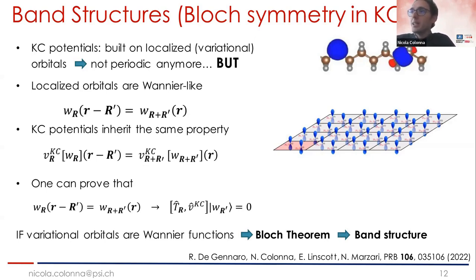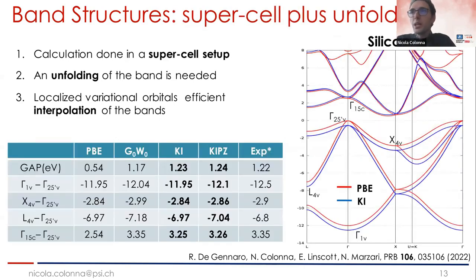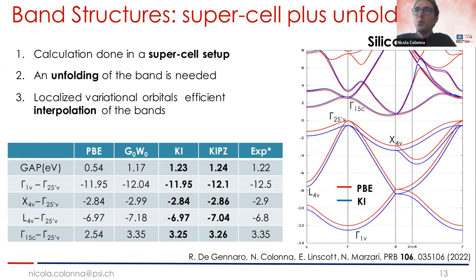All the details and the proof of this are given in a recent publication by Ricardo de Gennaro and the group of Professor Nicola Marzari. The key feature to realize is that the localized variational orbitals that naturally come out from the minimization are typically Wannier-like orbitals. This means they satisfy the translational properties of a Wannier function.